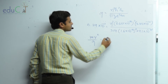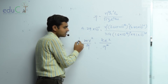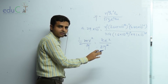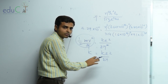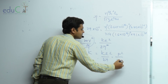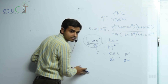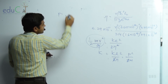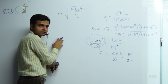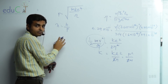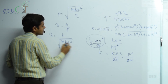n squared K e squared upon R equals K e squared upon R squared — cancel R, multiply half. Kinetic energy equals K e² upon 2R. Also, kinetic energy equals P squared upon 2M. So P equals under root of M K e² upon R.